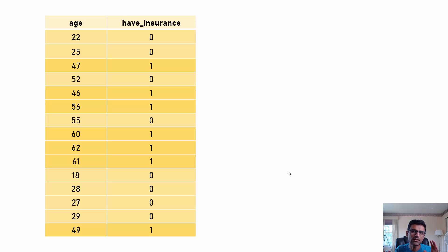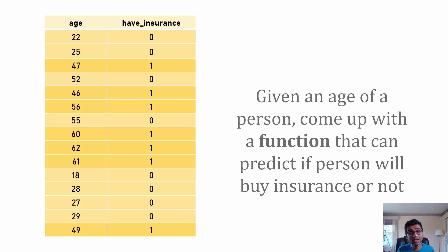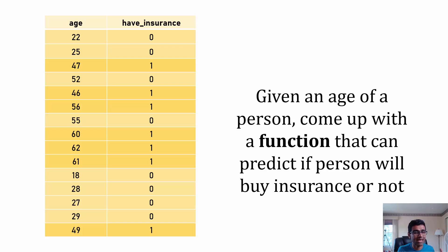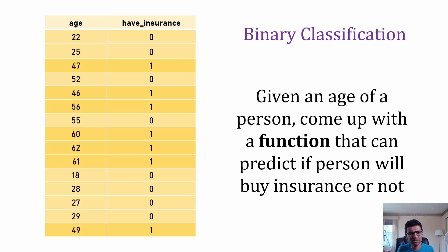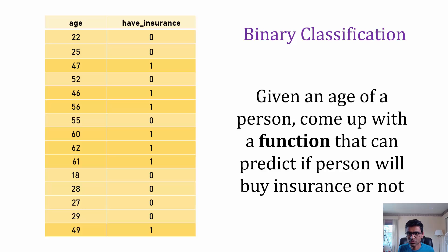We will be looking at the theory behind a single neuron neural network today, using a dataset where you have a person's age and whether they have insurance or not. Using this, you want to build a function that can predict if a person will buy insurance given an age. This is nothing but a binary classification problem — you give an age and get a zero or one output.